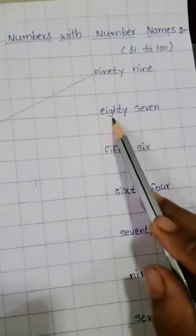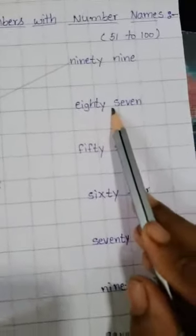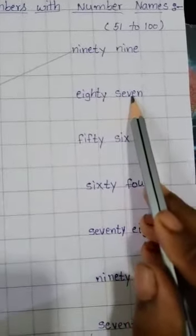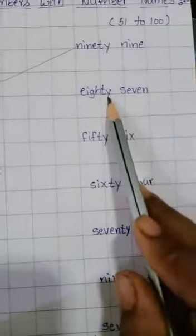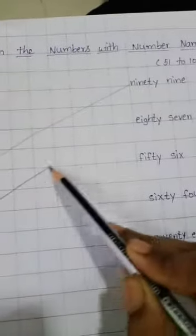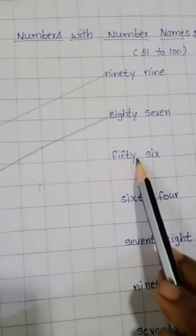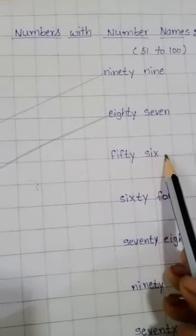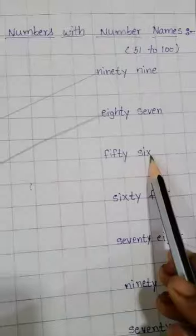Next, E-I-G-H-T-Y eighty, S-E-V-E-N seven, 87. 87 kaha hai numbers mein? Yes, 87. F-I-F-T-Y fifty, S-I-X six, 56.